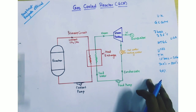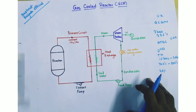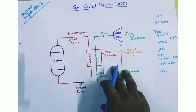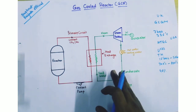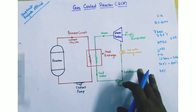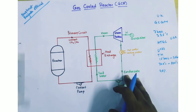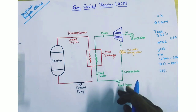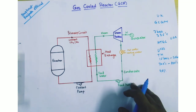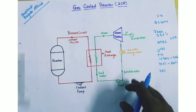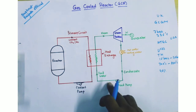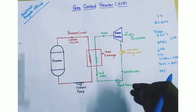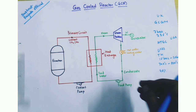Advantages of the gas cooled reactor: First, there is no corrosion problem due to the gas. Second, gases are safe and easy to handle. Third, graphite remains stable at high temperature and radiation problems are minimum. Fourth, it can be operated at high temperature and gases can be pressurized easily.